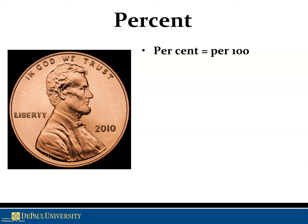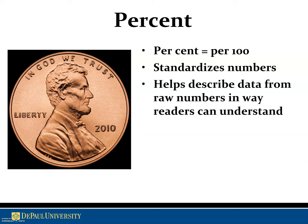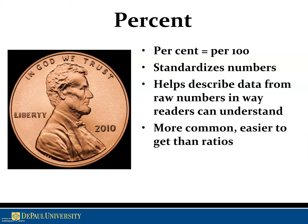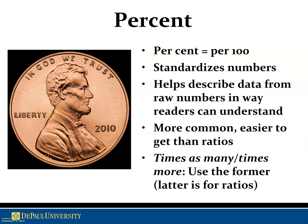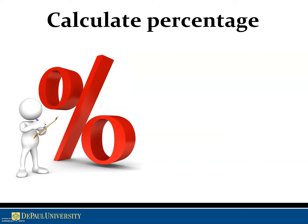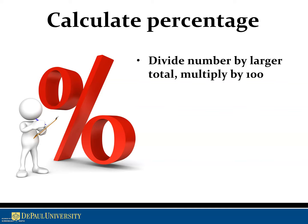The second of our three focus areas in Module 2 is percent, which simply means per 100. It helps standardize numbers — we'll talk about ratios and base numbers — and helps describe data from raw numbers into points of comparison that audiences can easily understand. It's more common and easier to understand than ratios, which is why you'll see it a lot. Use 'times as many' instead of 'times more' — the latter is for ratios. We'll mostly be dealing with percentages, and often it comes down to small differences in wording.